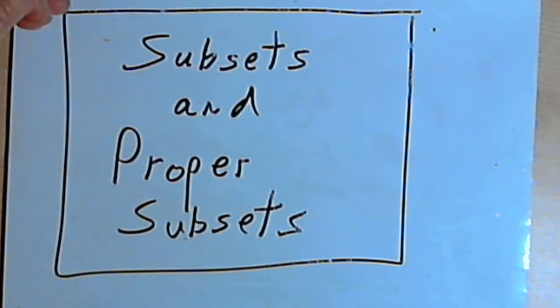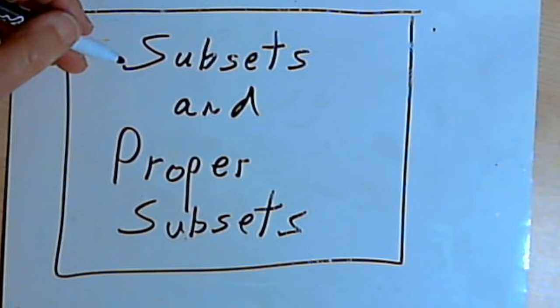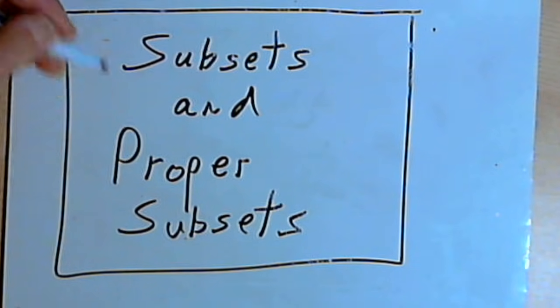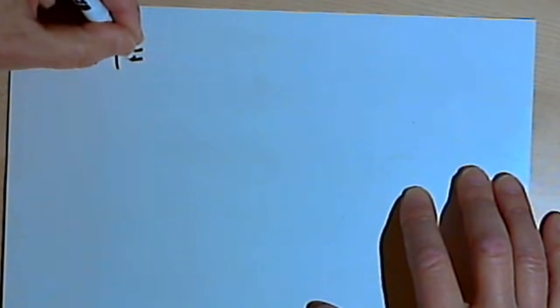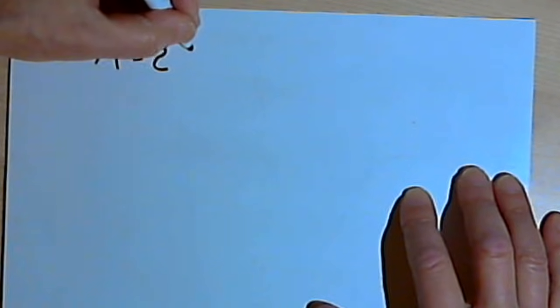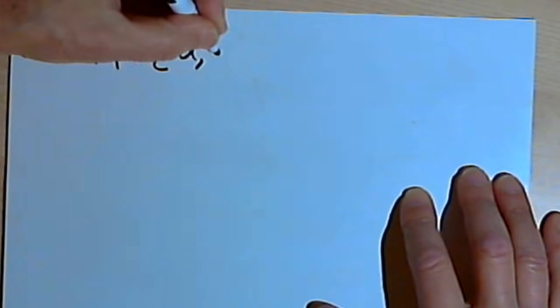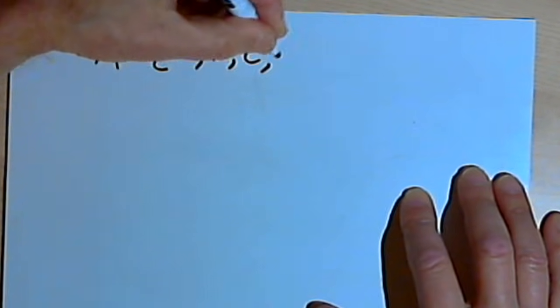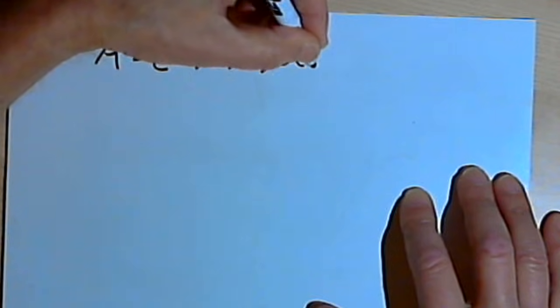This video is going to be about subsets and proper subsets. Let's say I start out with set A, and set A contains the elements A, B, C and D.